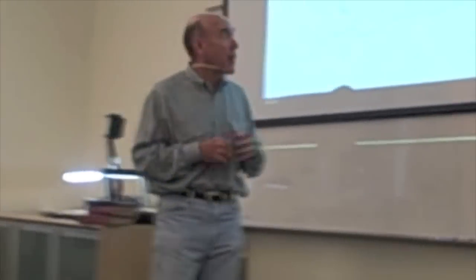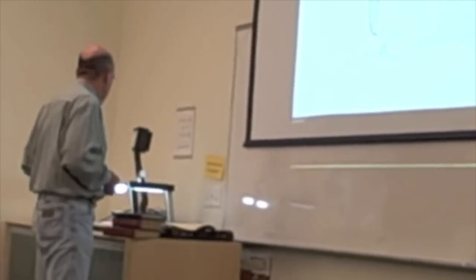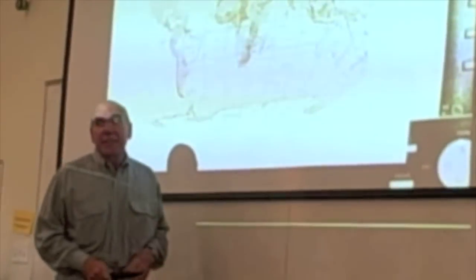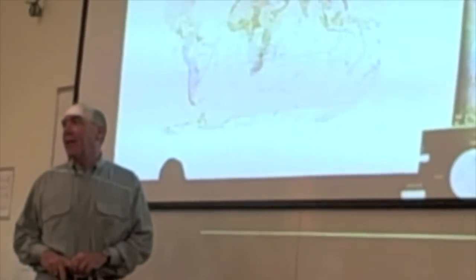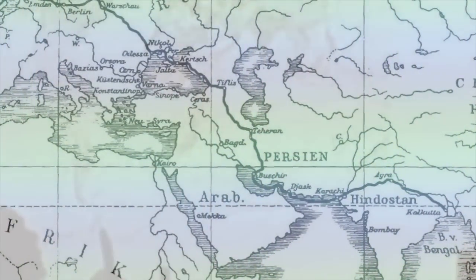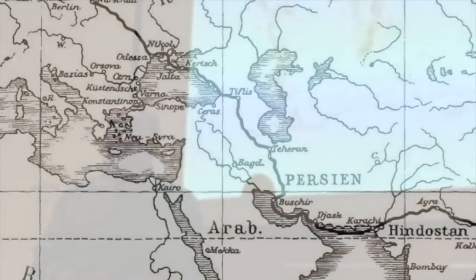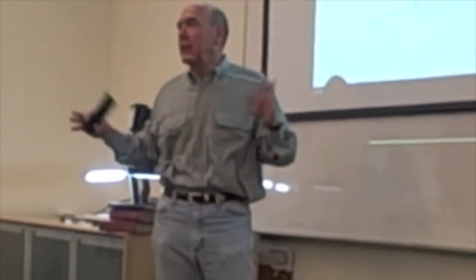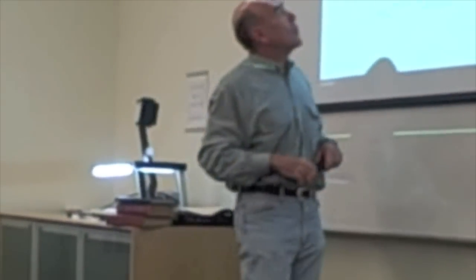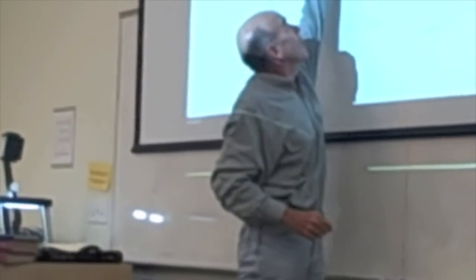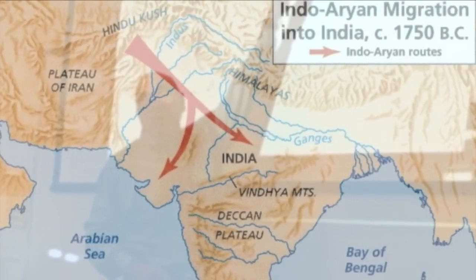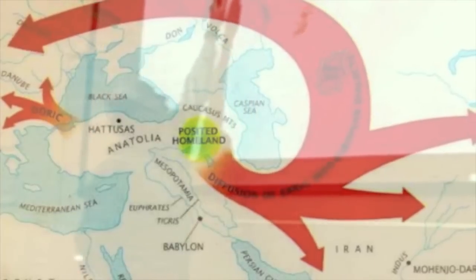There's a lot of debate about how long ago. But we think that sometime around 3000 BC, so 5000 years ago, something happened in this region of the world here that caused the people to migrate out. Maybe a natural disaster, maybe a war, we don't know. And those people migrated out of the central Caucasus area of Russia and migrated east as far as India and west as far as Iceland.